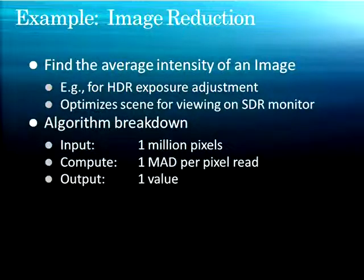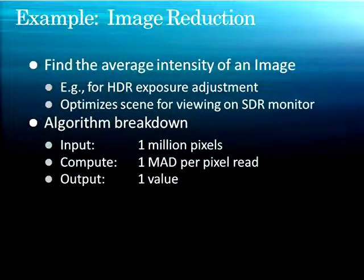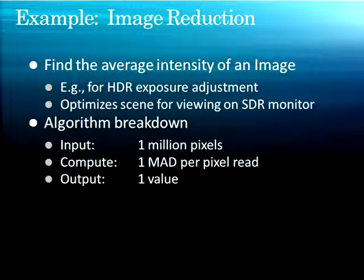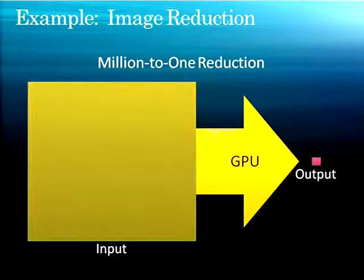I like to see things in code — it makes it more concrete and tangible. So we're going to go through an example of image reduction: finding the average intensity of an image, which you might use for high dynamic range exposure adjustment. We might have a 1K by 1K image, so that's a million pixels, with one multiply-add per pixel — take the pixel, calculate its luminance, divide by the number of pixels, add that to the final result. The output is one value. So it's this million-to-one reduction — a huge input down to a tiny little output.